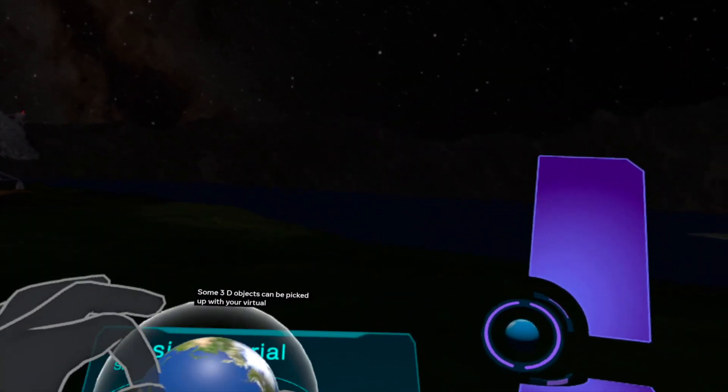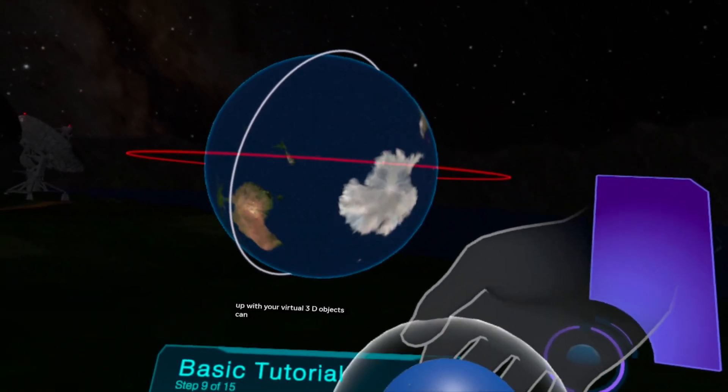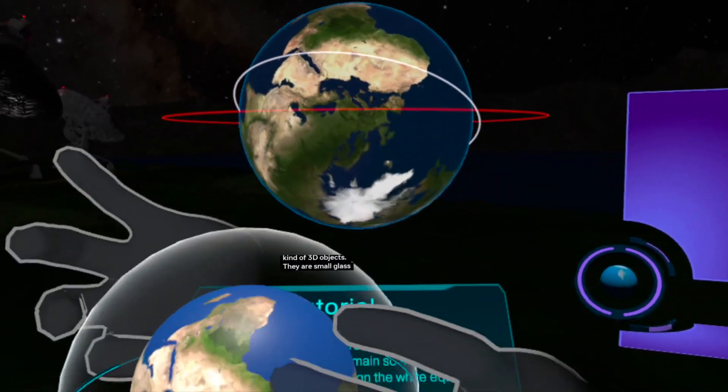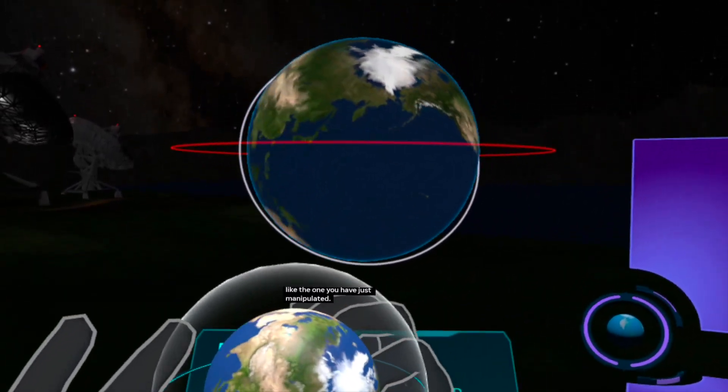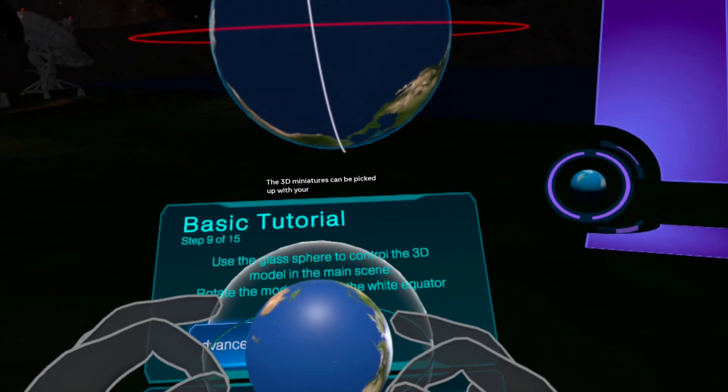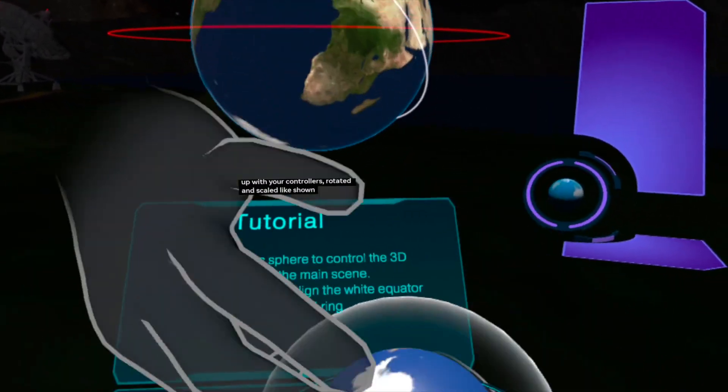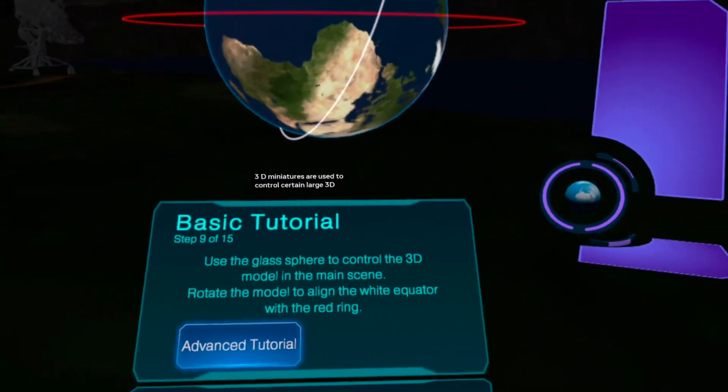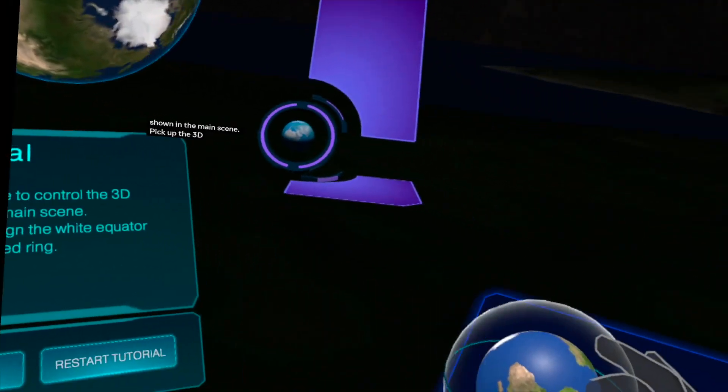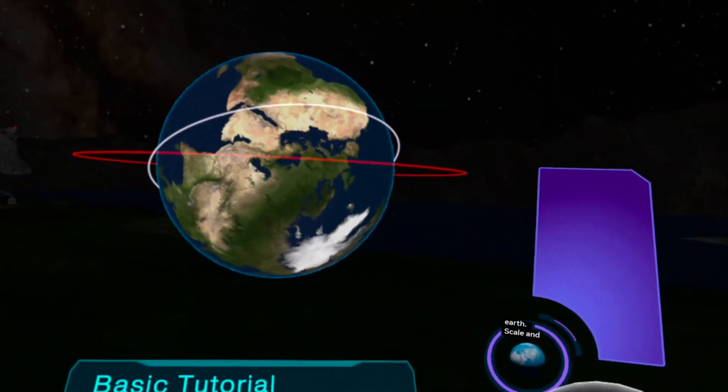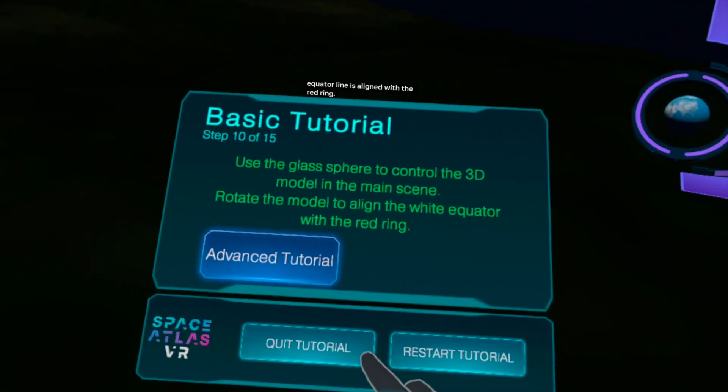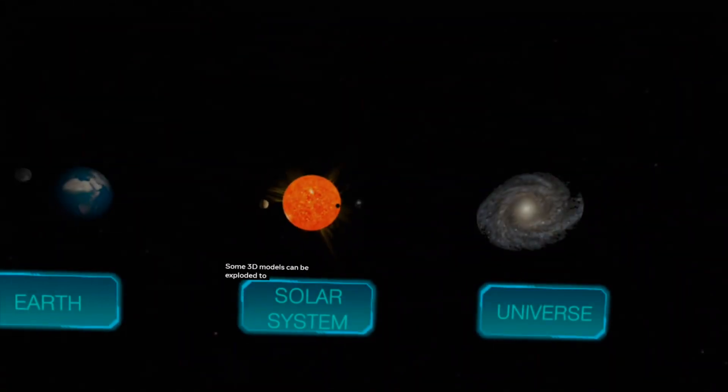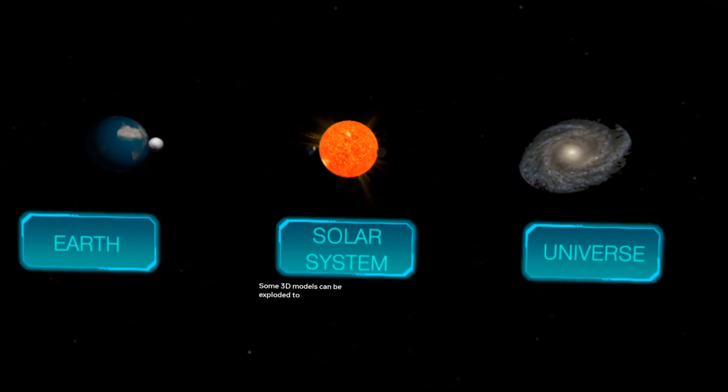3D miniatures are a special kind of 3D objects. They are small glass spheres like the one you have just manipulated. The 3D miniatures can be picked up with your controllers, rotated and scaled. They are used to control certain large 3D models shown in the main scene. Pick up the 3D miniature of the Earth, scale and rotate it until the equator line is aligned with the red ring.